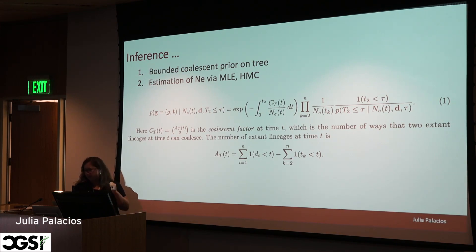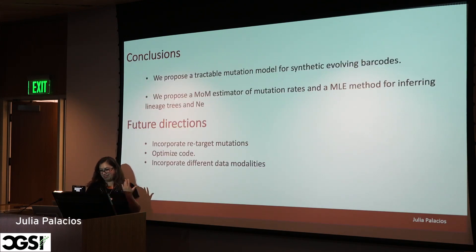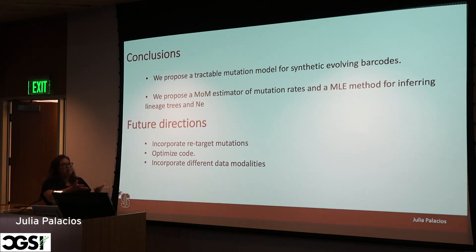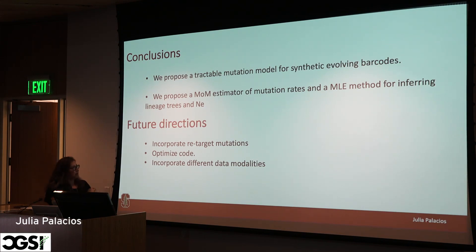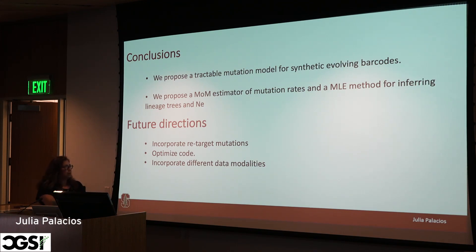We have a nice mutation model that is simple and fast. But inferring the phylogenetic tree for large numbers of samples is still not very efficient. Bayesian inference would be ideal but maximum likelihood is already very hard. There is also a possibility we want to incorporate re-target mutations as some new technologies start to enable that. There is still a lot of room for improvement.